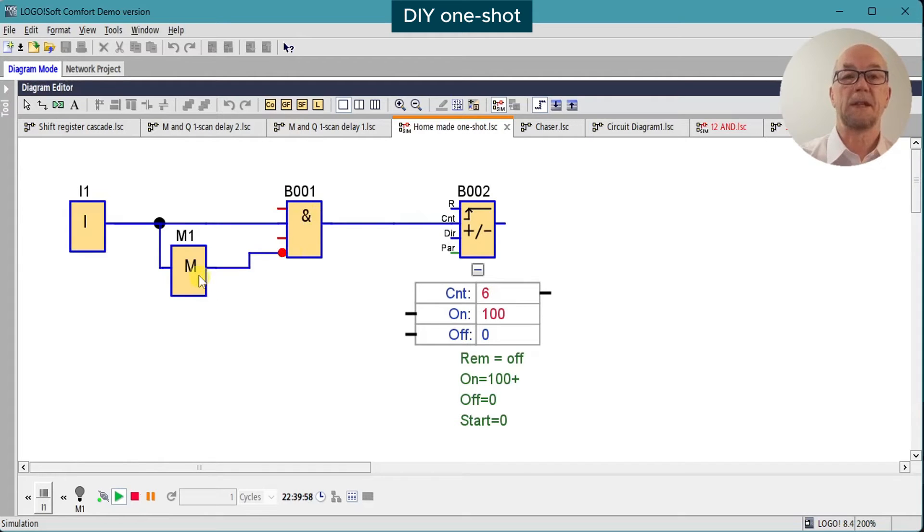At the end of the scan, the M turns on and that turns off the AND gate, and so we just get a single pulse output.